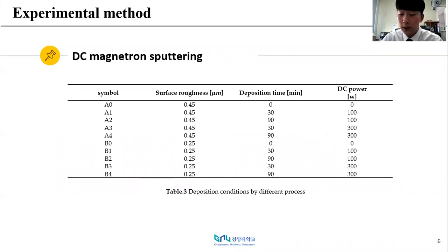Table 3 shows deposition conditions according to the working process. The titanium thin film deposition experiment was conducted under two surface roughness conditions by setting 100 Watt and 300 Watt and 30 minutes and 90 minutes for deposition time respectively.